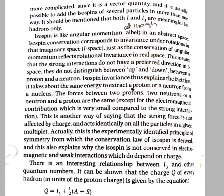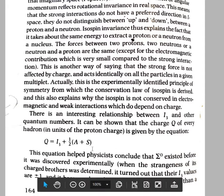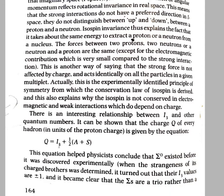An important equation is the Gell-Mann–Nishijima formula: Q = I3 + (1/2)(A + S), where A is the baryon number and S is the strangeness number. I3 has a different value for different particles. This gives the relation between charge and I3. When S is conserved, I3 is also conserved; in both strong and electromagnetic interactions, both S and I3 are conserved.